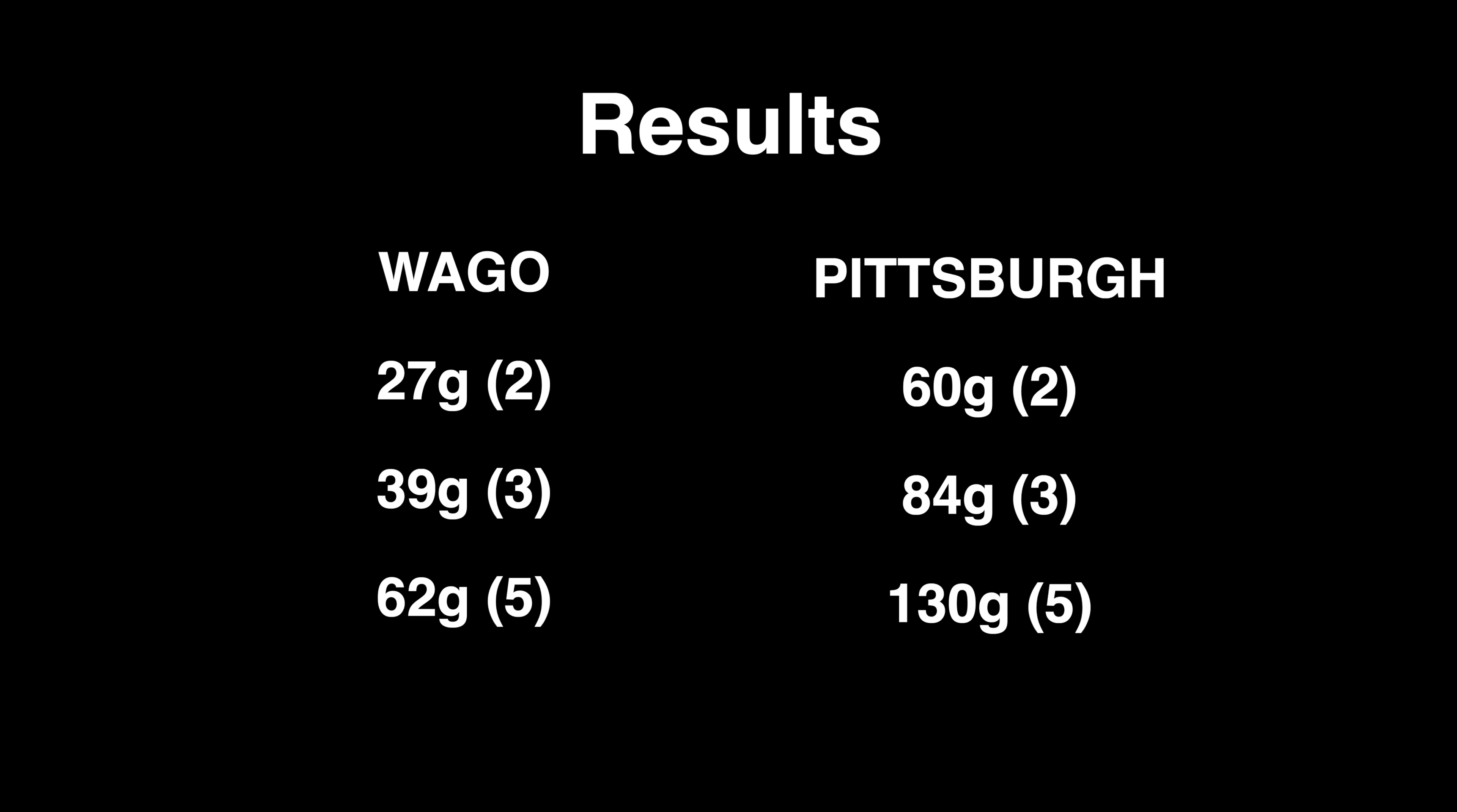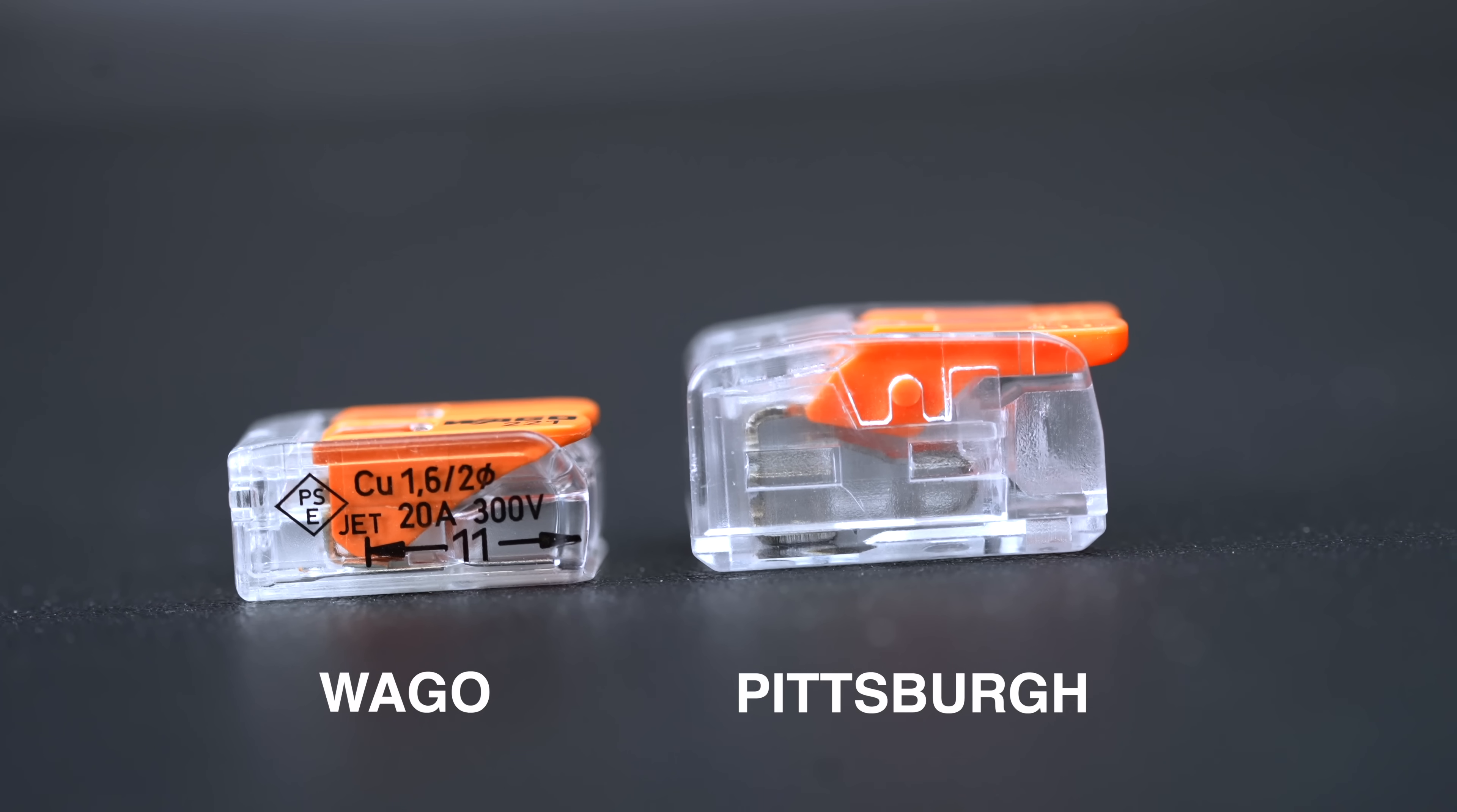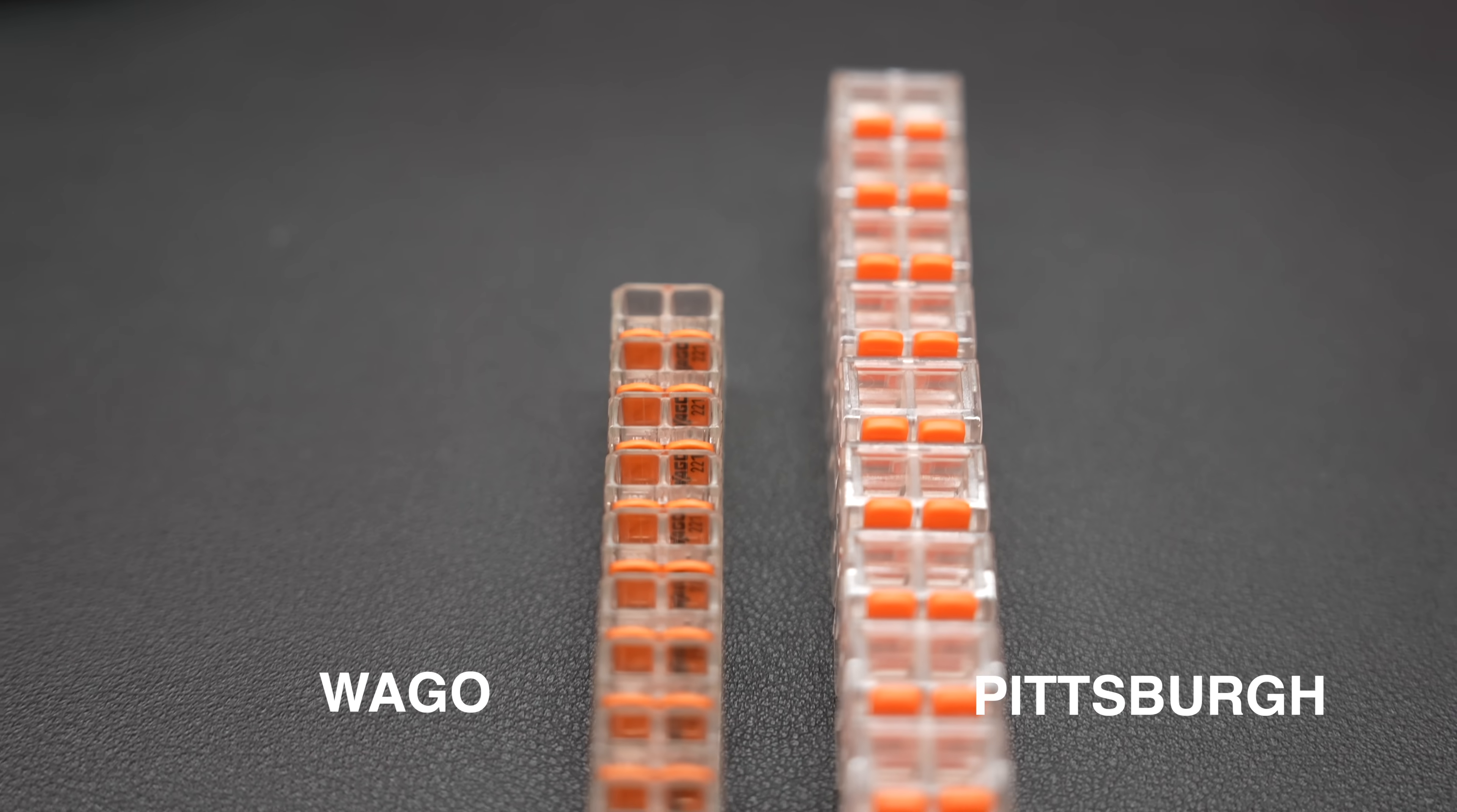When you look at these connectors side by side, that size advantage is really important on the Wago. That means you'll be able to fit more of them in a tight electrical box, and that does happen quite frequently. Here we've got 10 of each connector and you can see it really is significant.